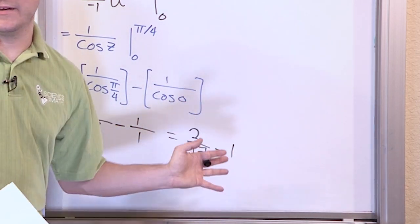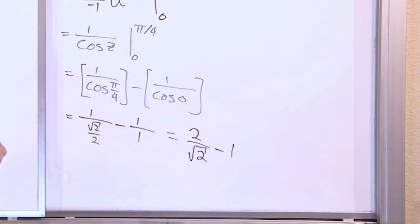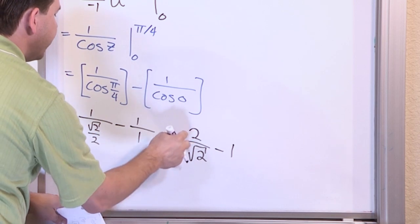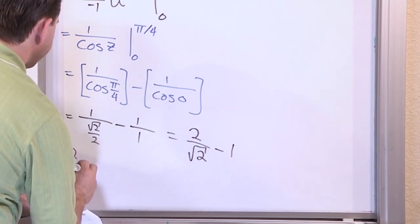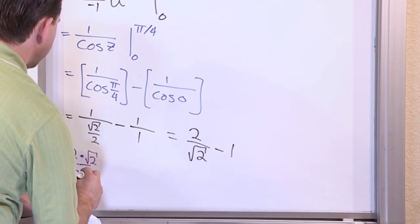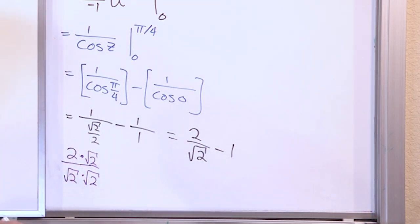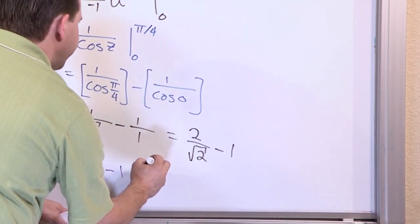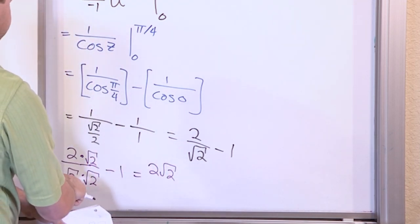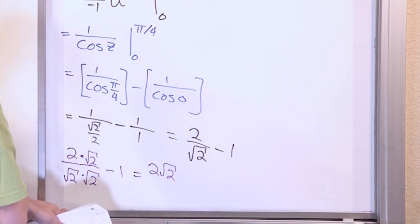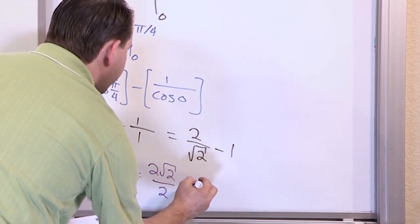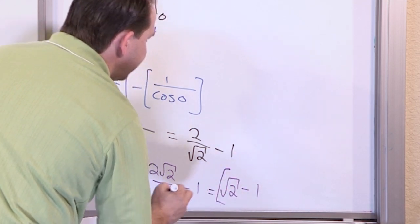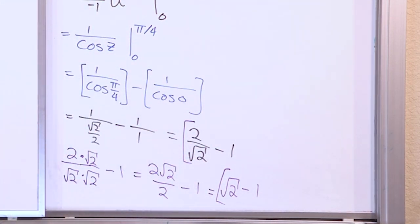Some teachers dislike square roots in the denominator. To rationalize, multiply 2 over root 2 by root 2 over root 2 — that's multiplying by 1. The numerator becomes 2 times root 2, the denominator becomes root of 4 which is 2. The 2s cancel, leaving root 2. So the final answer is root 2 minus 1.